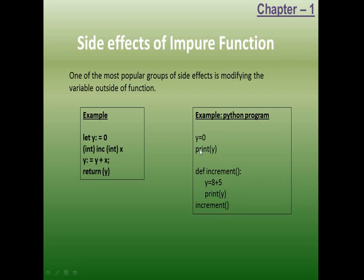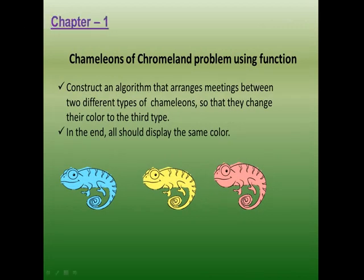See the Python program: y = 0. Print y — so the value of y when we print will be zero. There is a function definition — 'def' is a keyword to define a function in Python. The function name is given, followed by open bracket, close bracket, colon. Inside the function: y = 8 + 5, so the value of y is changed here. Then we ask to print the value of y. 'increment()' — this is the function call. When the function is called, control goes to the definition and the instructions are executed.